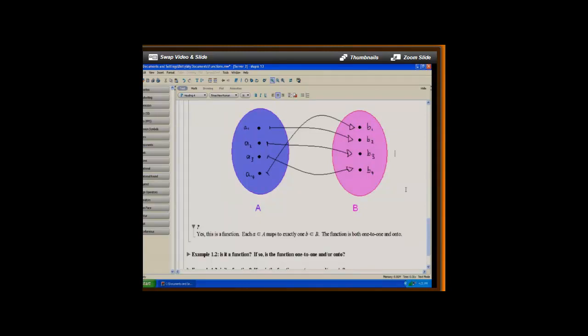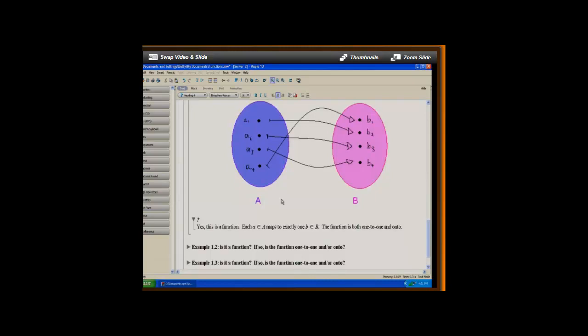And to check for one to one, we want to make sure that every distinct pair of members of A go to different places in B. So in other words, we don't want two members of A going to the same place in B, and we can also see that's not the case. So it is one to one.